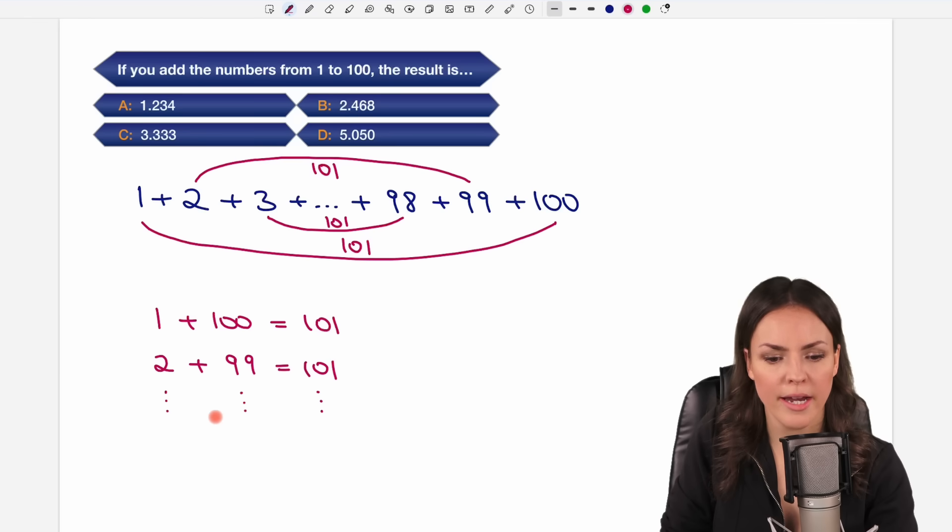What would be our last pair we had here. So we have 100 numbers. So the middle of this would be the 50. So we can add the 50 and the 51 and get 101 as well.